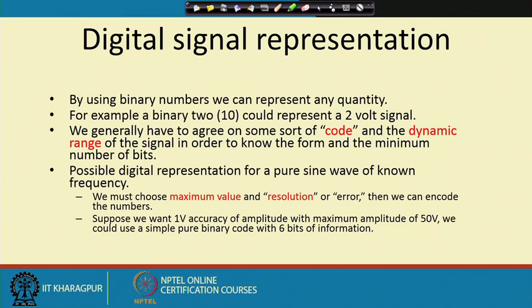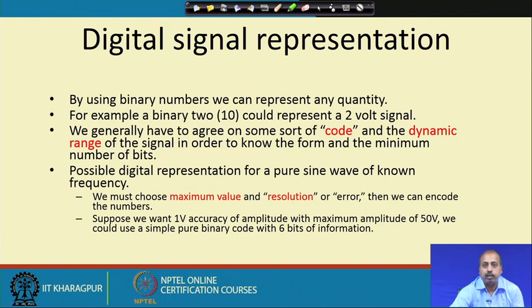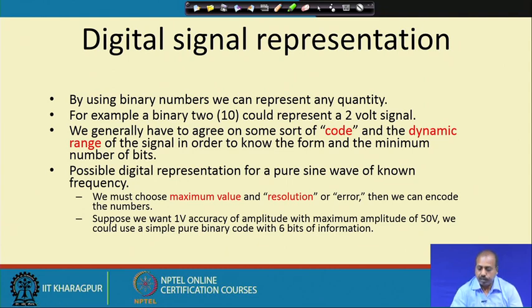We must know the dynamic range — what values the signal can pick up — and accordingly decide the minimum number of bits to use for storing that information. For a digital representation of a pure sine wave of known frequency, we must choose the maximum value and the resolution or error — at what difference of values we are going to sample. Suppose we want 1 volt accuracy and the maximum amplitude is 50 volts, so the signal goes from minus 25 volt to plus 25 volt.